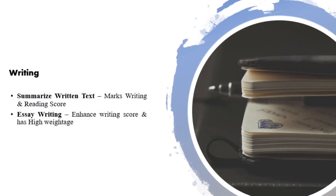Then is writing. Writing has two tasks: first is summarize written text, and then is essay writing. Summarize written text is important because it will mark your writing and reading score. Essay writing is the most important because it carries a lot of marks and will exclusively mark and enhance your writing score. So you need to focus on that and also incorporate vocabulary when writing in the essay section.